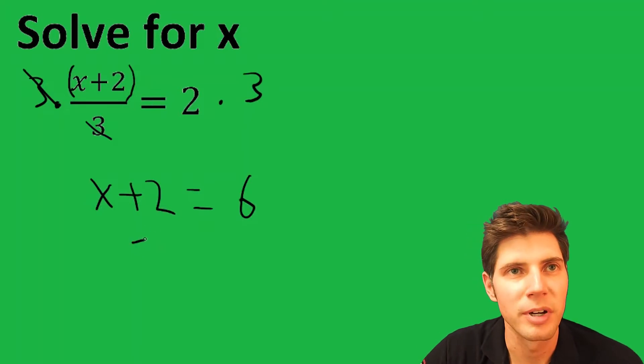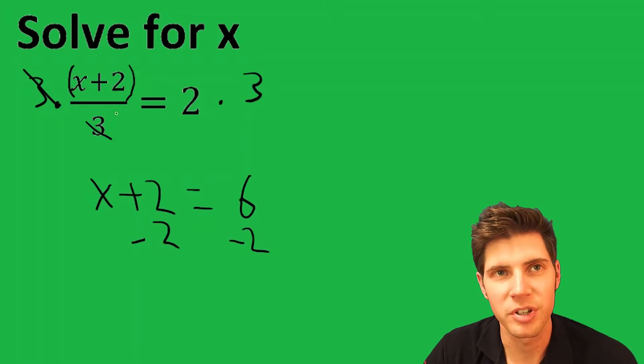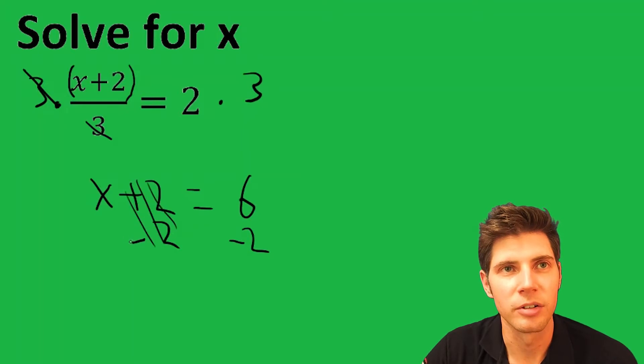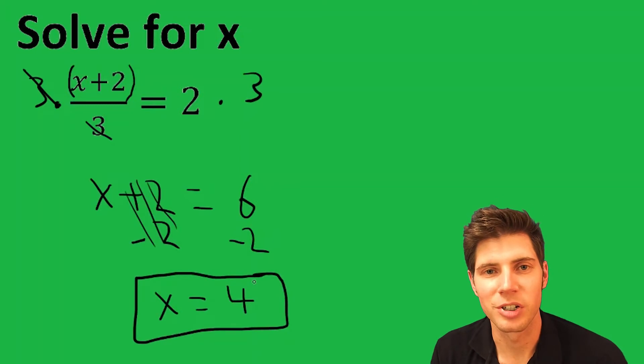The way we get rid of a plus 2 is a minus 2. So do it to both sides. These cancel. And you're left with x equals, and 6 minus 2 is 4. And that's the answer to the question.